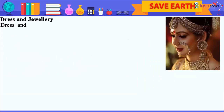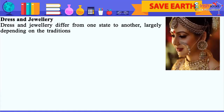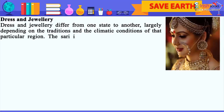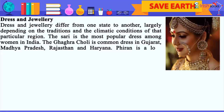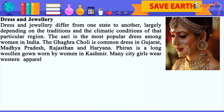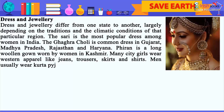Dress and jewelry differ from one state to another, largely depending on the traditions and the climatic conditions of that particular region. The sari is the most popular dress among women in India. The Ghagra Choli is a common dress in Gujarat, Madhya Pradesh, Rajasthan and Haryana. Pheran is a long woolen gown worn by women in Kashmir. Many city girls wear western apparel like jeans, trousers, skirts and shirts. Men usually wear kurta pyjama, dhoti kurta, lungi, shirt, trousers, etc.